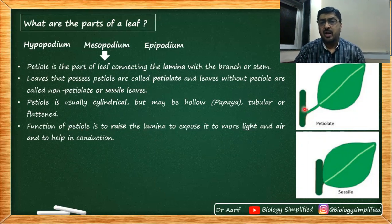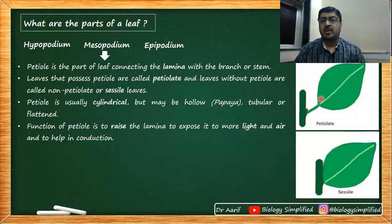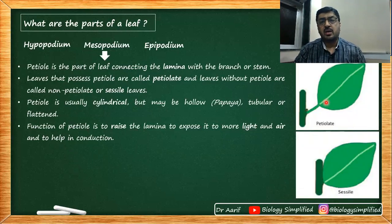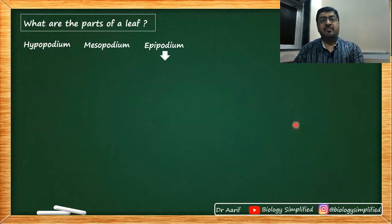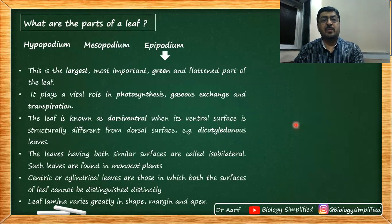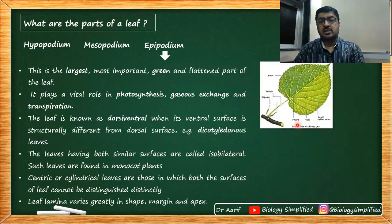The function of the petiole is to raise the lamina — the longer the petiole, the more it pushes the lamina forward for maximum sunlight exposure for photosynthesis. It also helps in conduction of water and food between the stem and the leaf.